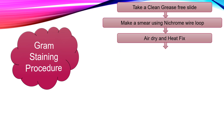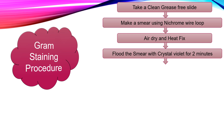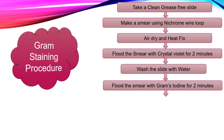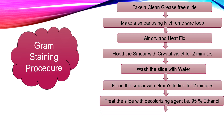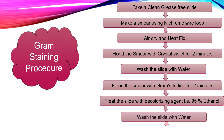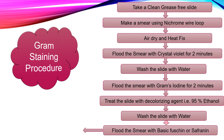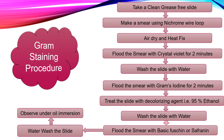After that, air dry and heat fix the smear. After heat fixation, flood the slide with the first stain, crystal violet, for 2 minutes. After 2 minutes, wash the slide with water. Then apply Gram's iodine for 2 minutes. After 2 minutes, treat the slide with the decolorizing agent, 95% ethanol. Then wash the slide with water, and further flood the smear with counter stain, that is basic fuchsin or safranin. After 2 minutes, water wash the slide and observe under oil immersion.